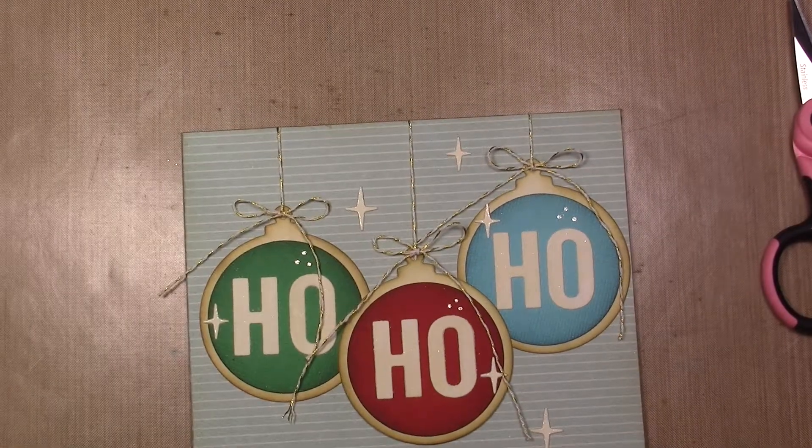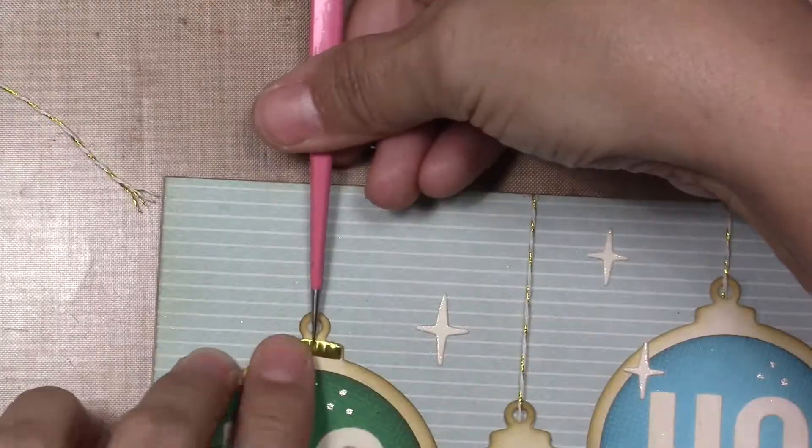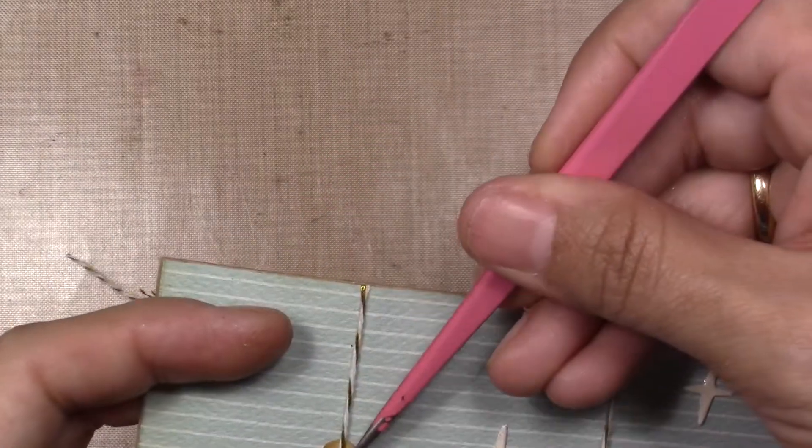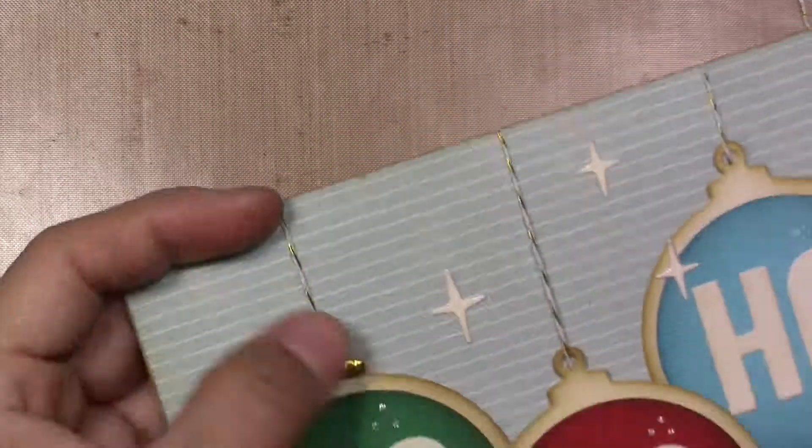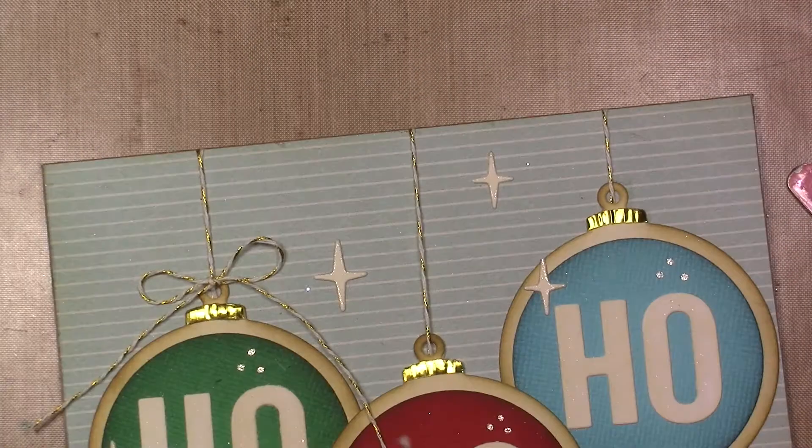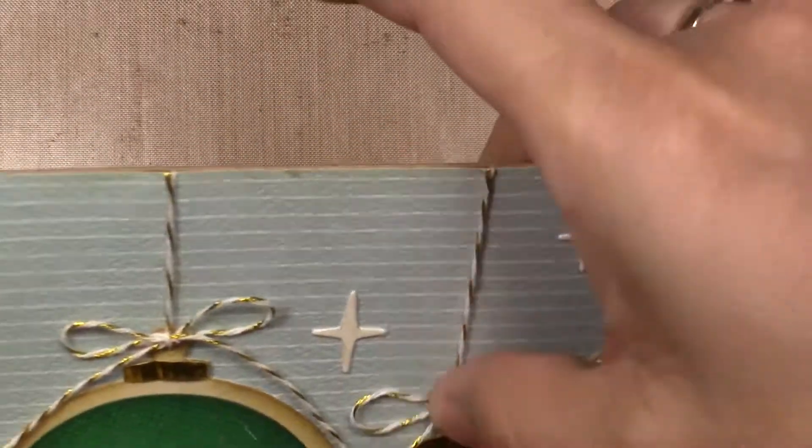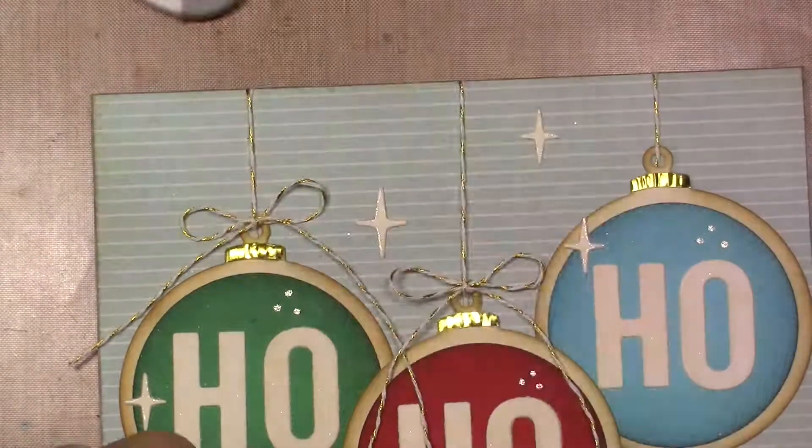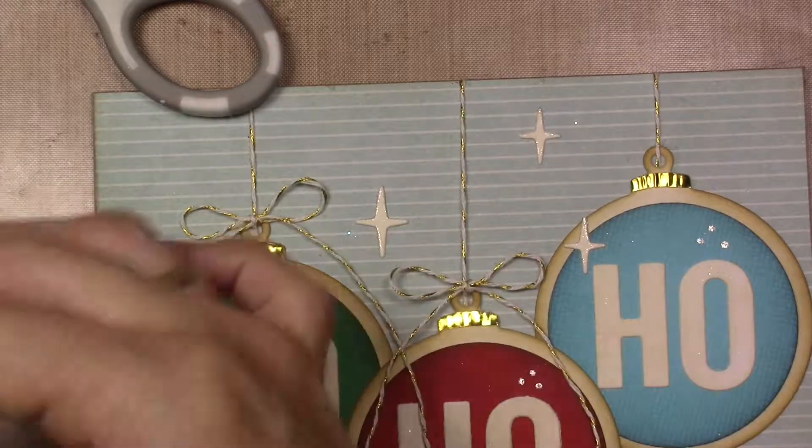After I finish that I'm going to add these three bows made with the same baker twine. I cut this in aluminum foil in color gold, embossed it with some lines and added it to my ornaments with the bows. This is my card for today.